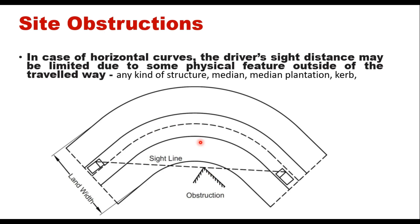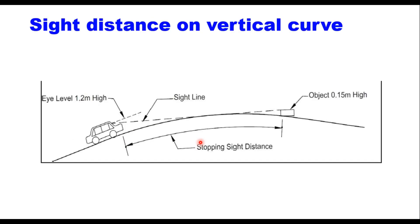In the case of a vertical curve, if you draw a tangent to the curve and at one end take a height of 1.2 meters above the road surface, and at the other end take a height of 0.15 meters above the road surface, then the length between these two points becomes the stopping sight distance.